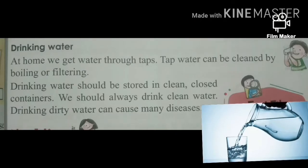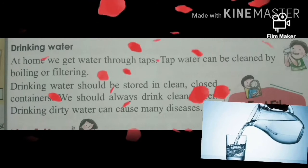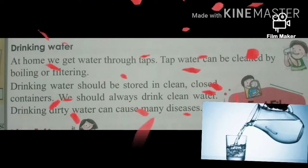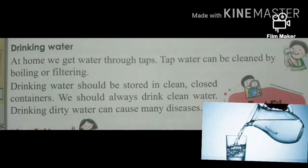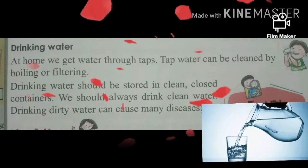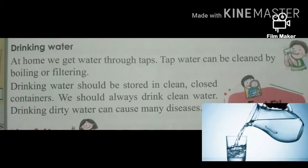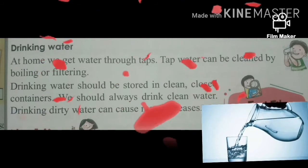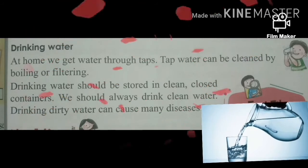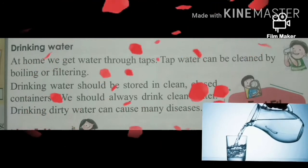Now, drinking water. At home, we get water through taps. Tap water can be cleaned by boiling or filtering. Drinking water should be stored in clean, closed containers — जो पानी होता है पीने का, उसको साफ जगह पे बंद containers में store करके रखते हैं. We should always drink clean water — हमें हमेशा clean water पीना चाहिए. Drinking dirty water can cause many diseases.